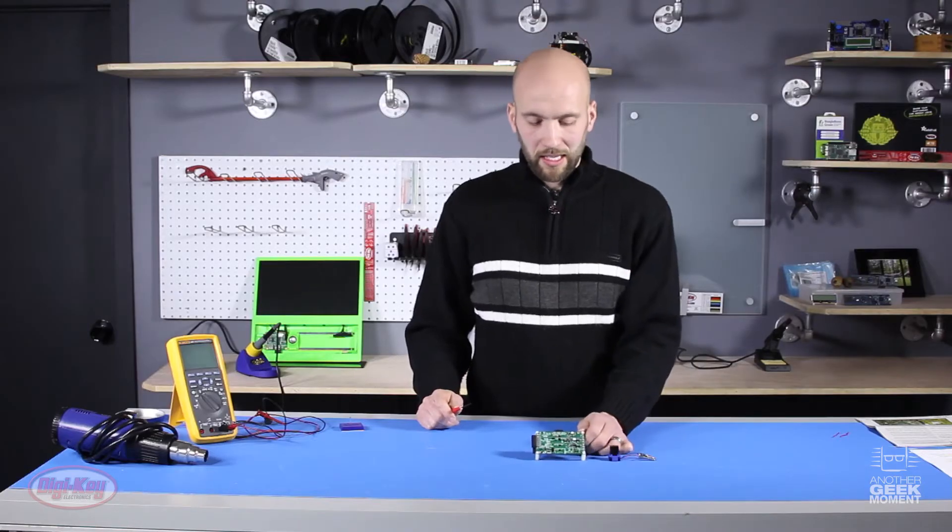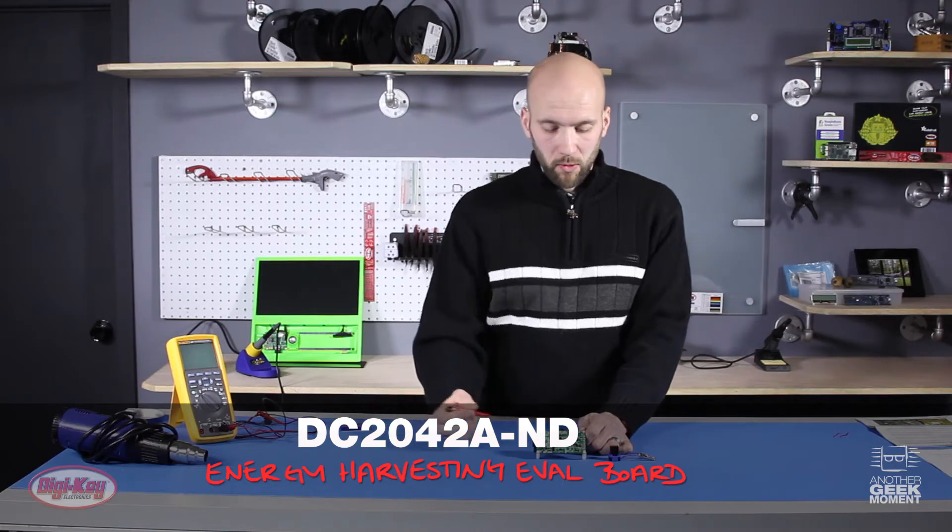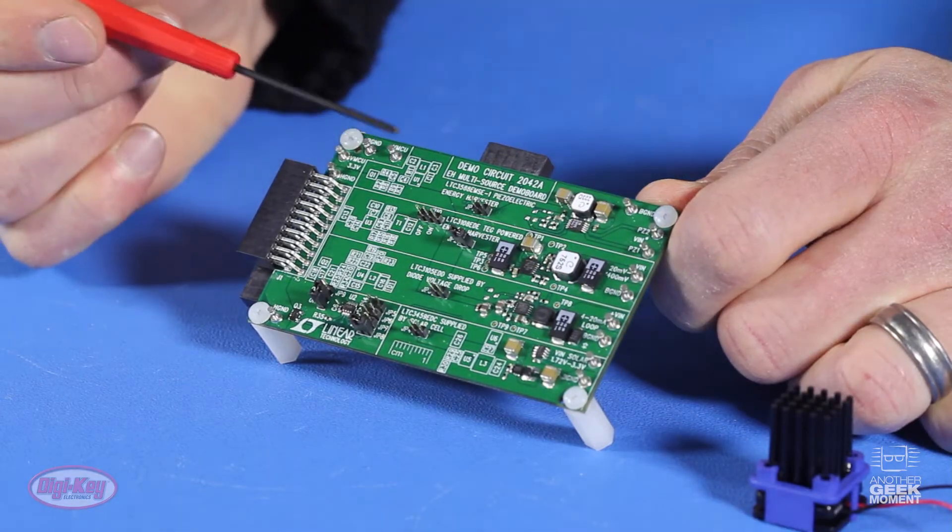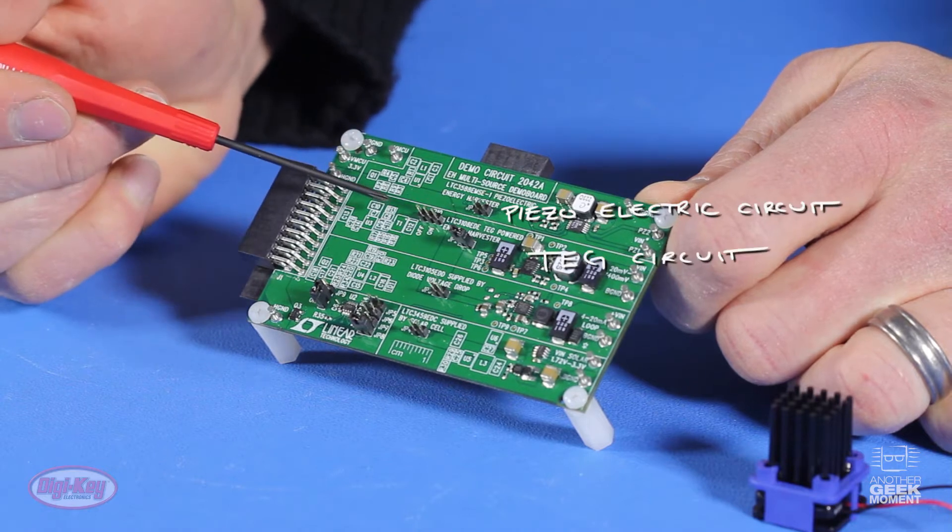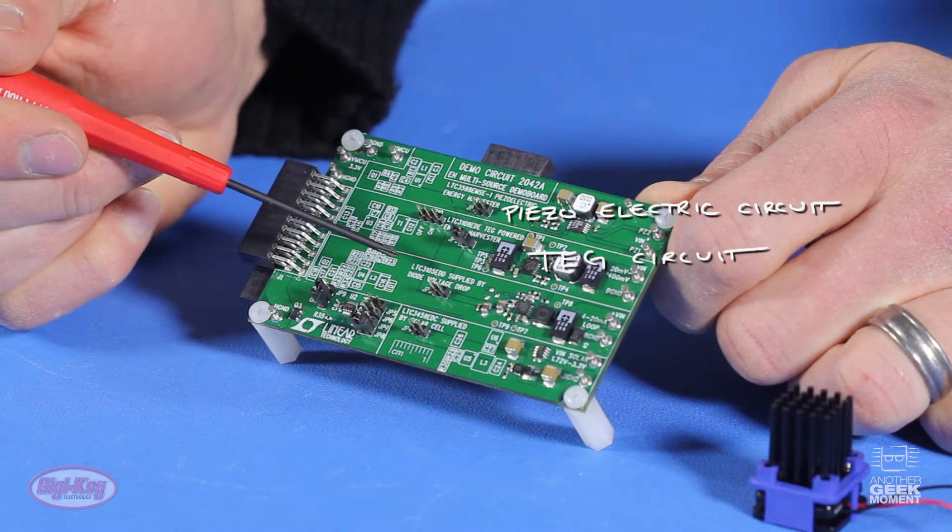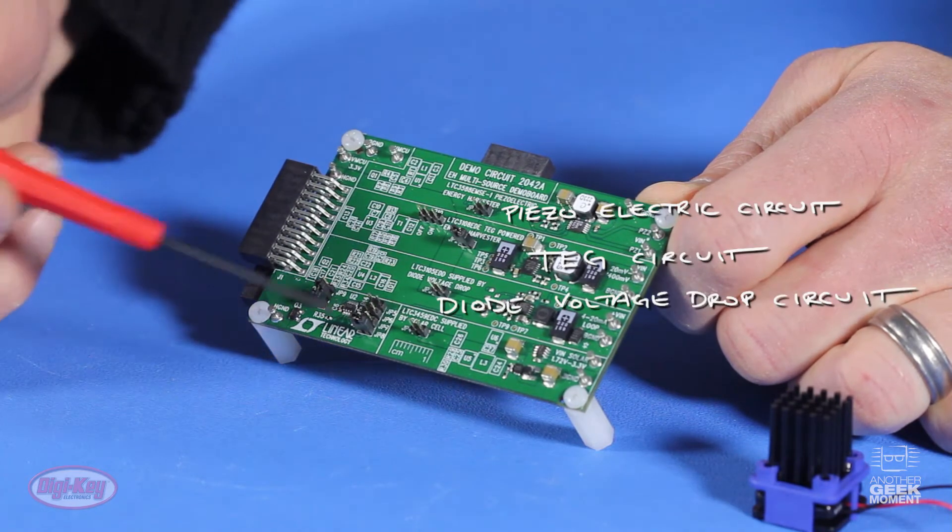First up is the Linear Tech Evaluation Board. This comes with four separate circuits for energy harvesting. There's a piezoelectric circuit, a TEG circuit, a diode voltage drop circuit, and a solar cell circuit.